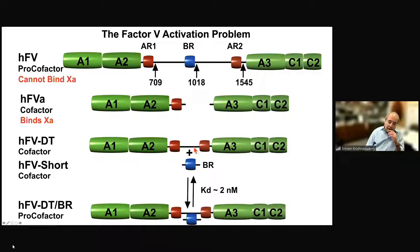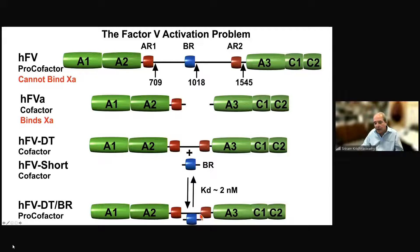The amazement didn't stop there, because what you could do is take this isolated basic region — say produced in bacteria — add it back to the species, and it bound with really high affinity in a calcium-dependent way, to revert this constitutively active cofactor to a procofactor — one that couldn't function in binding 10a or working as a cofactor, and then required proteolysis to be activated. That's basically the set of observations that has set us along this path.